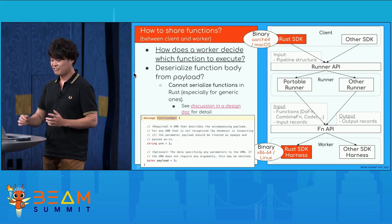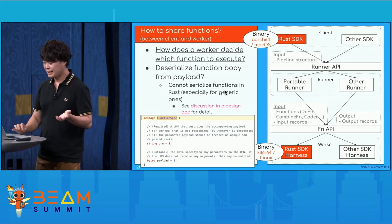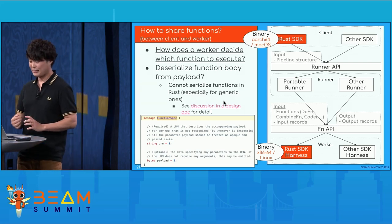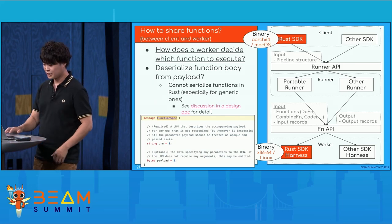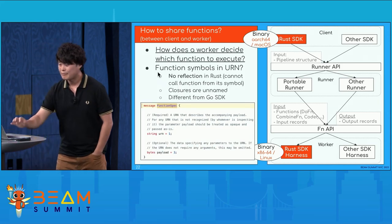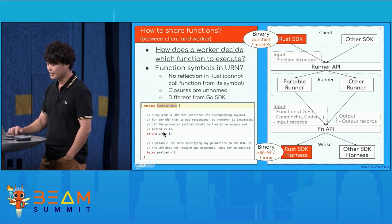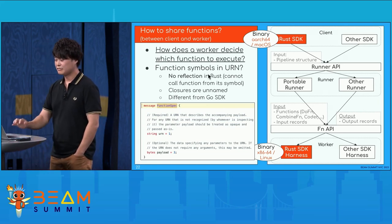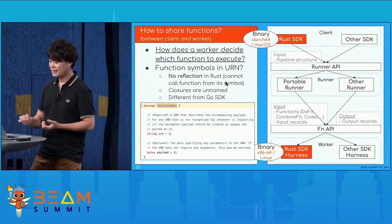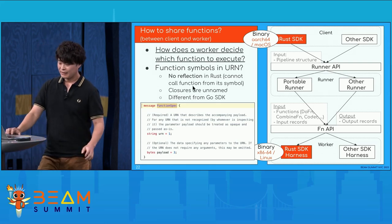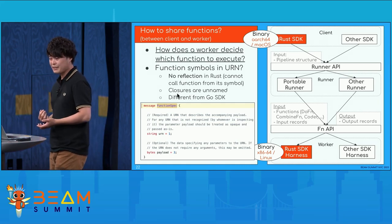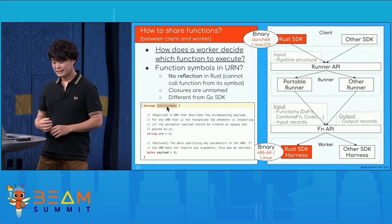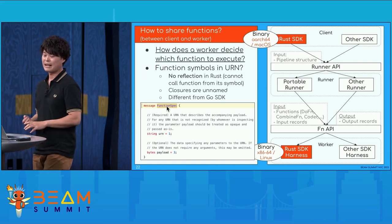How about deserializing the function body from the payload? The client would serialize the user-defined function body in the payload and the worker would deserialize it and call the function body. Unfortunately, we cannot do this easily because Rust cannot serialize functions, especially generic functions — it is virtually impossible to serialize such generic functions. How about putting function symbols in the URN? Unfortunately, that is also impossible. Rust does not have a reflection feature, so Rust cannot call a function from its symbol. Furthermore, closures in Rust are unnamed, so there is no function symbol for closures in Rust. This is the most different part compared to the Go SDK.